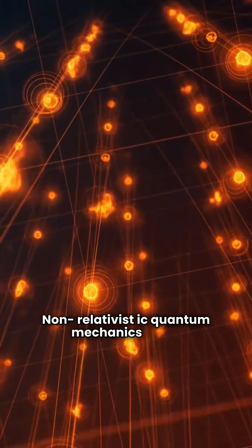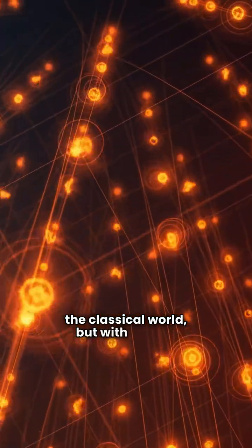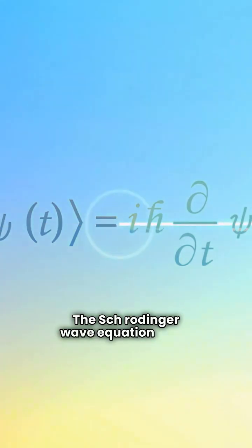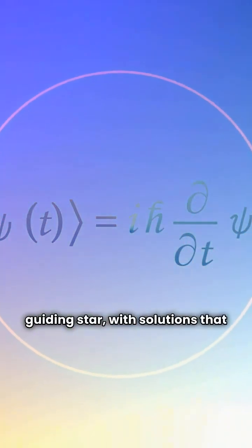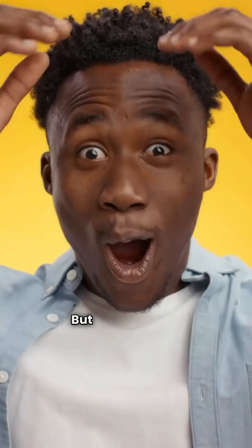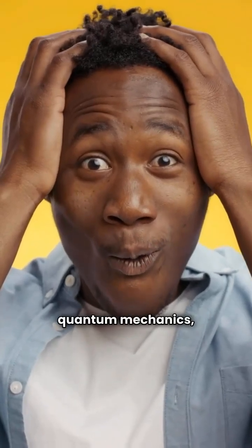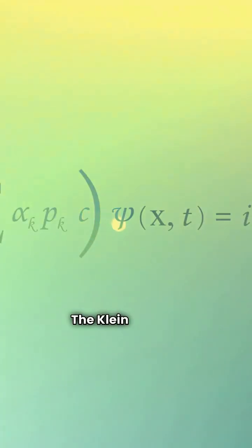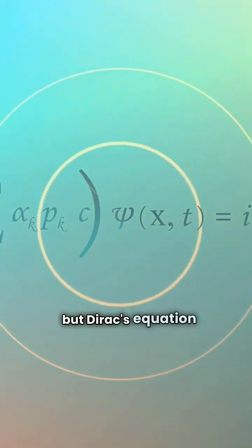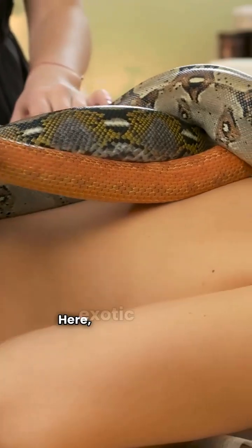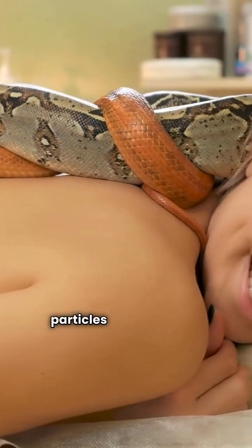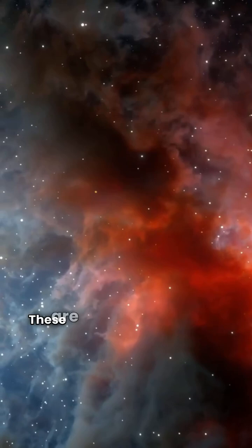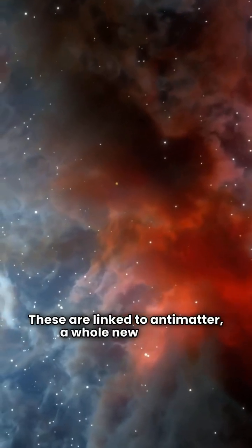Let's summarize our discussion today. Non-relativistic quantum mechanics is like the classical world, but with a twist. The Schrödinger wave equation is our guiding star, with solutions that feel familiar. Just like in classical mechanics, particles here always have positive kinetic energy. But when we dive into relativistic quantum mechanics, things get wild. The Klein-Gordon equation is simple, but Dirac's equation steals the show. Here, exotic solutions emerge where particles have negative kinetic energy — these are linked to antimatter, a whole new frontier.